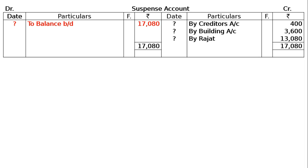Now total both sides — both sides total 17,080. In the suspense account, they have asked us to rectify the errors and show the suspense account with nil closing balance. There is no closing balance, hence the entire amount from the credit side is taken to the opening side as the opening balance. This balancing figure closes the suspense account, and this is all about our answer.